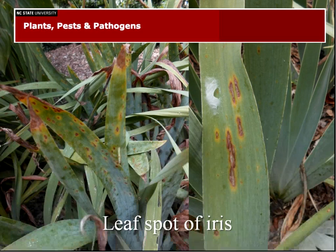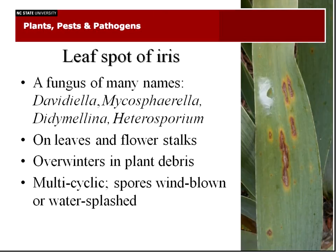This one, however, can go so far as to warrant fungicides. This is what we call leaf spot of iris. The fungus has had 10 different names over the years — Didymellina, Mycosphaerella, Vitamina, Heterosporium — but if we just call it leaf spot of iris, we're good. It not only occurs on the leaves but also in the flower stalks, and it overwinters in the plant debris. It's multicyclic — once the disease gets started in the spring, those infections produce spores which produce new infections, and so on through the year. Those spores get from leaf to leaf and plant to plant by wind currents or water splash.